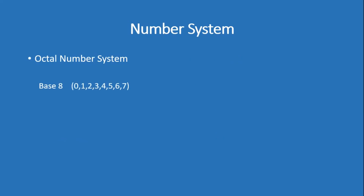The next number system is the octal number system. In the octal number system, there are 8 unique digits, so the base is 8 and the digits are 0, 1, 2 up to 7. An example of the octal number system is 247 base 8. In the octal number system, the data should have digits between 0 and 7 only — there is no possibility of 8 or 9.